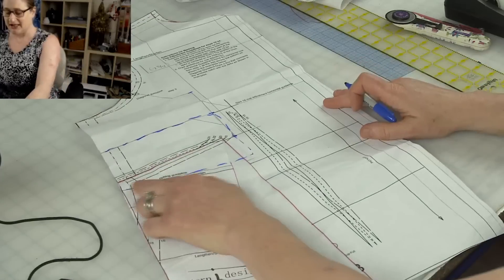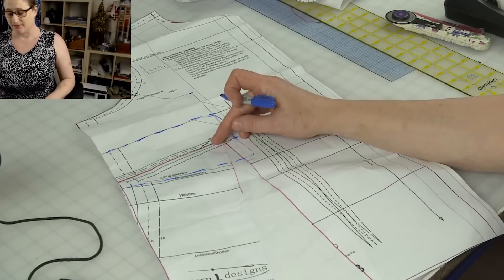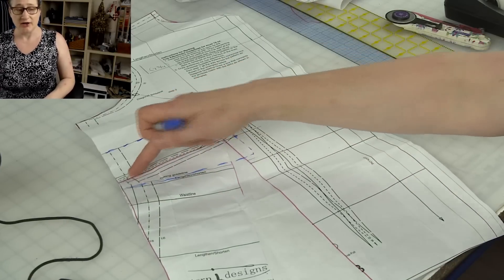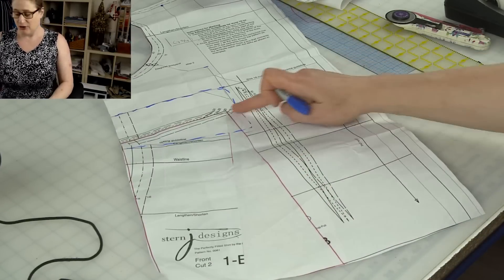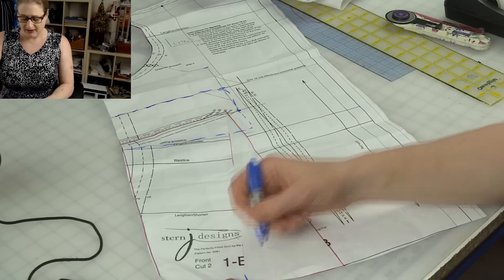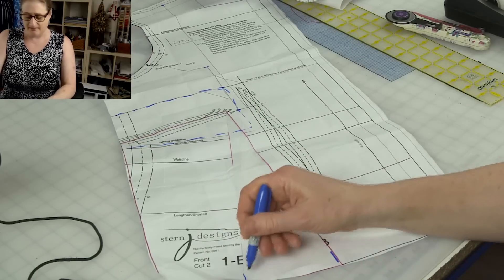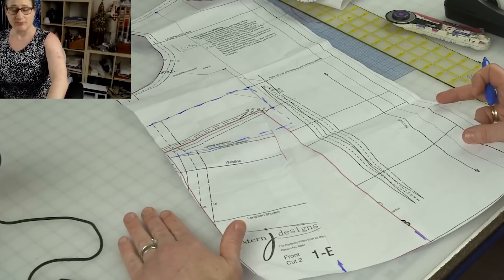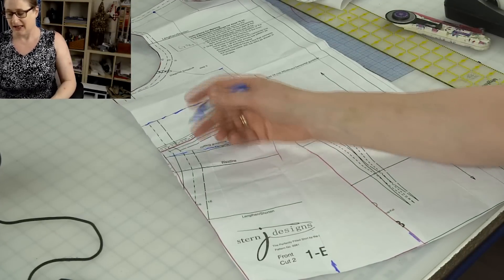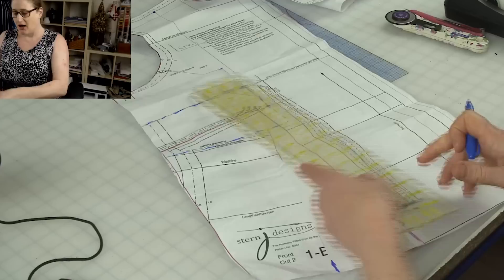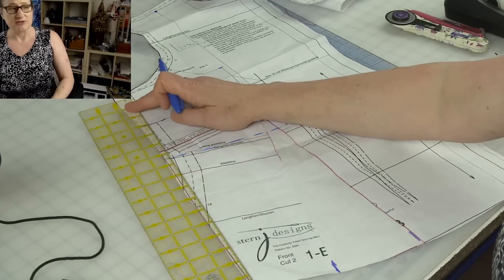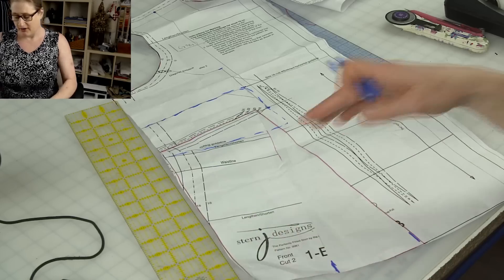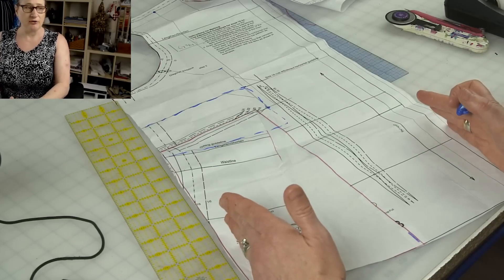Then what I did was, you can see here this pink line, I closed the dart. So the dart is closed right here and it opened here and you can see it's huge. It opened like four inches at the hem. So what happened was it winged out the side seam pretty far. So you can see what I did was I brought it back in. So I chopped it, it was way out here and I basically just cut it off so it was a good amount for her full hip.